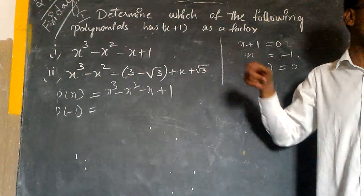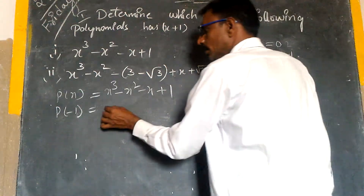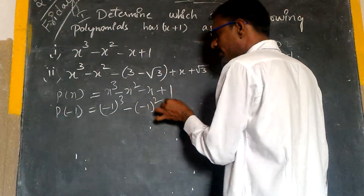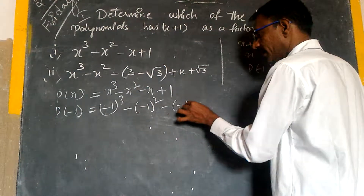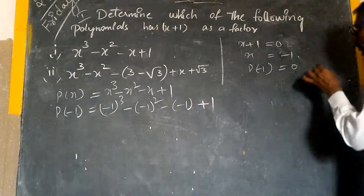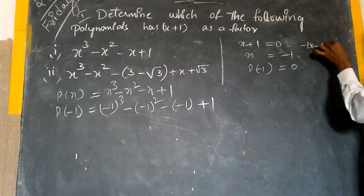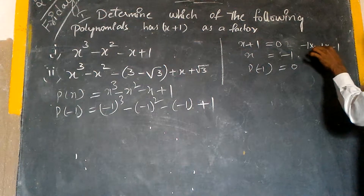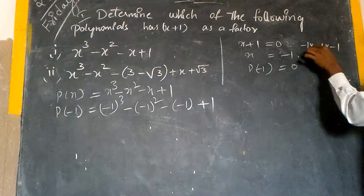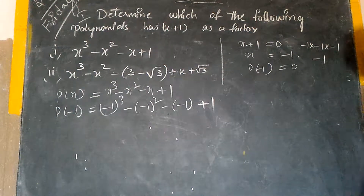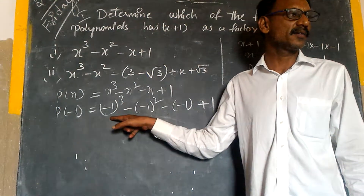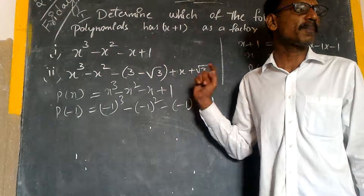Suppose p(x) equals x cube minus x squared minus x plus 1. By taking p(minus 1), if it equals zero, then x plus 1 is a factor; otherwise it is not. So we compute: minus 1 whole cube, minus minus 1 whole square, minus minus 1, plus 1. Minus 1 whole cube is minus 1 times minus 1 times minus 1. If the power is odd, it gives minus value; if the power is even, it gives plus 1.